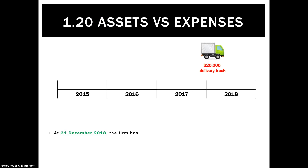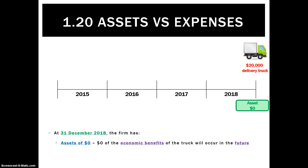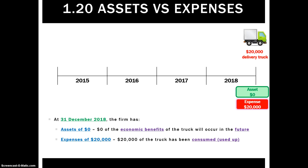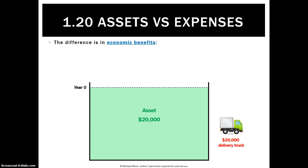And for 2018, we're finally going to consume all of the truck, so there'll be no economic benefits left for the future. Therefore, the asset is worth $0, and the total expenses will be $20,000 because the whole truck and its economic benefits have been used up or consumed.